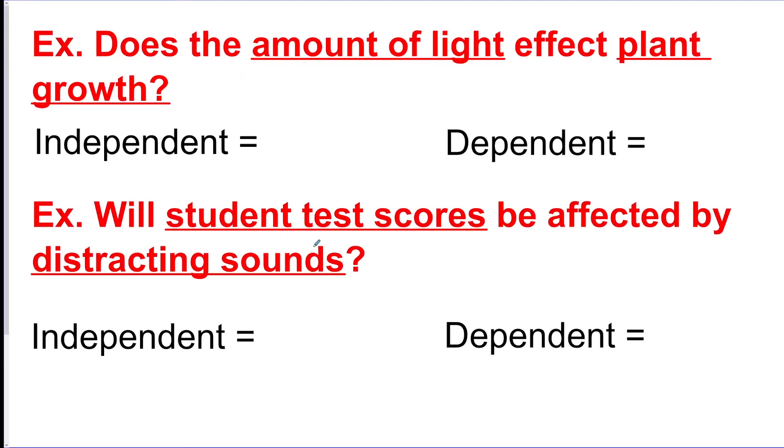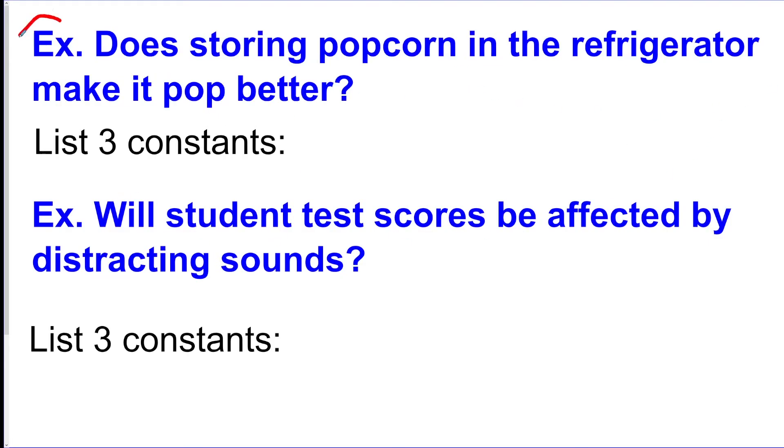One more example for the road. Let's do this one here: does storing popcorn in the refrigerator make it pop better? So the storing of the popcorn is going to be the independent variable because we're storing it in the fridge and we're not storing it in the fridge. Those are our two different experiments. Then we're going to measure if it's going to pop better, so that's the dependent variable.